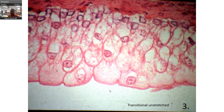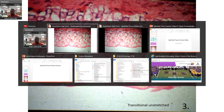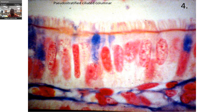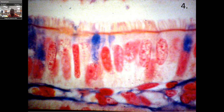Number four — pseudostratified columnar. One of the things you should look for is the cilia. The nuclei are not uniform, as you would see with regular columnar.